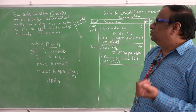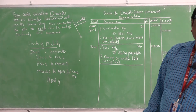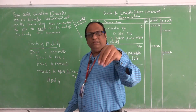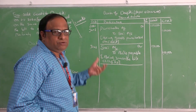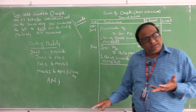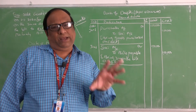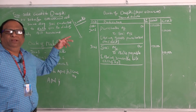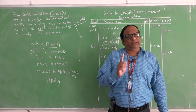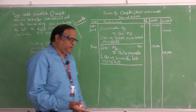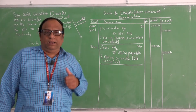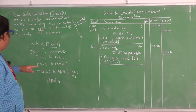Now Saai endorsed the bill to Kala. There is no need to pass any entry in the books of Deepti because it is a relation between Saai and Kala. If the drawer discounts the bill, endorses the bill, or does anything else, there is no entry needed in Deepti's books. The drawee will do only two things: either honor the bill or dishonor the bill. Honor means making payment on the date of maturity; dishonor means refusing to pay. In this problem, the bill is honored.